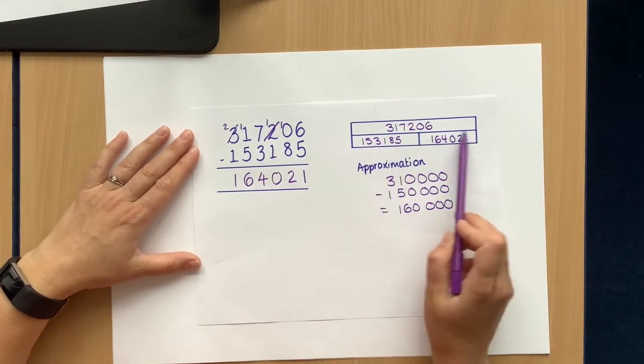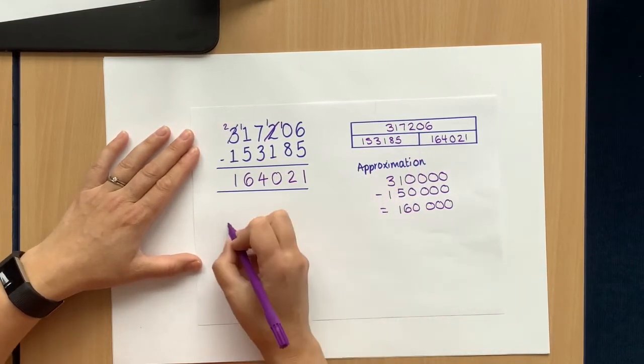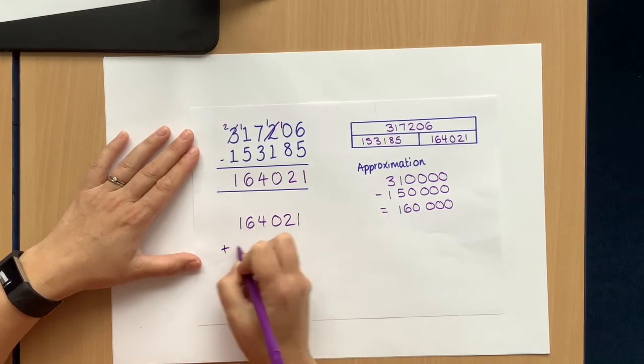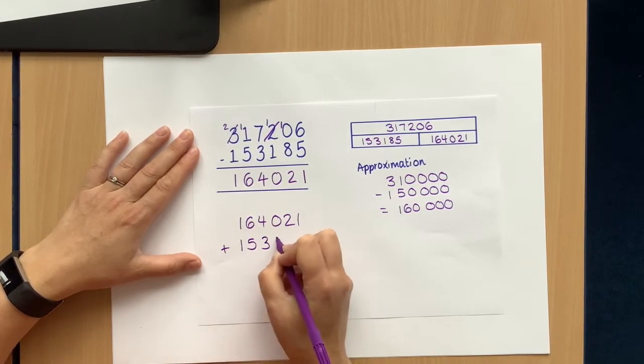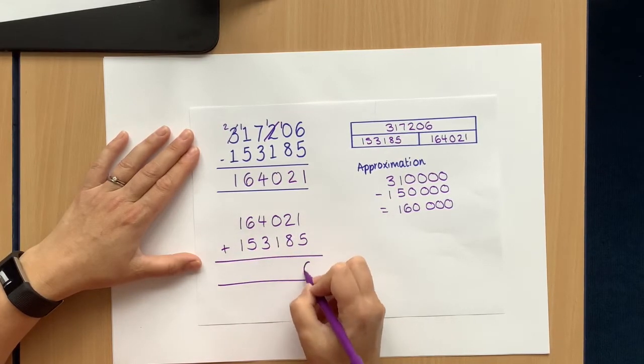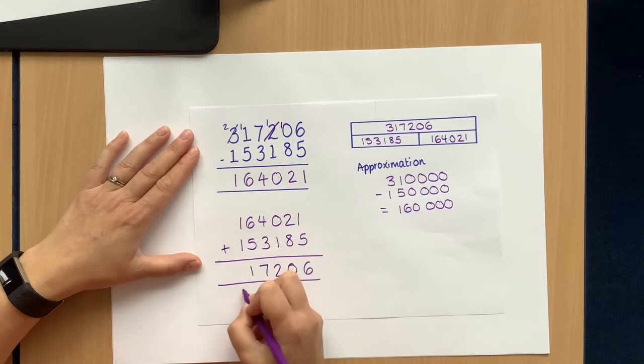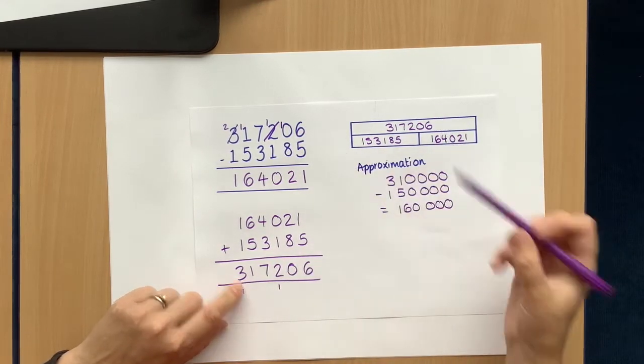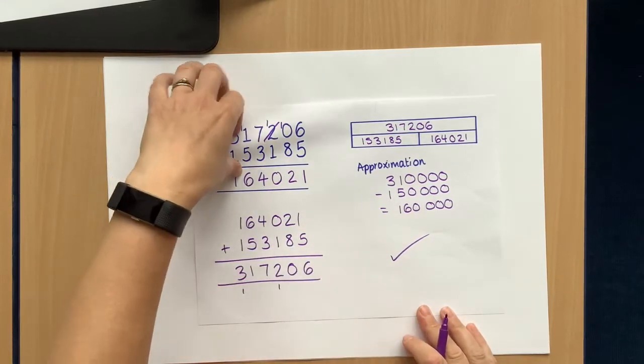Let's do the inverse to check. So now, looking at my bar model, I should be able to add these two and come up with that answer. Let's just check it. Just check my calculation as I go, make sure I'm not making any mistakes. And this number and that number match. That's what I started with. So I've got it correct.